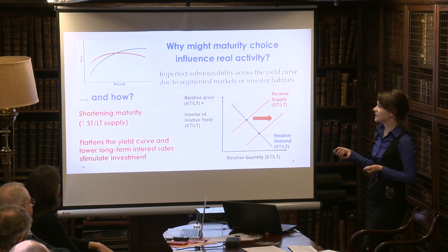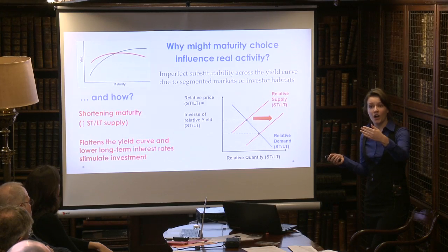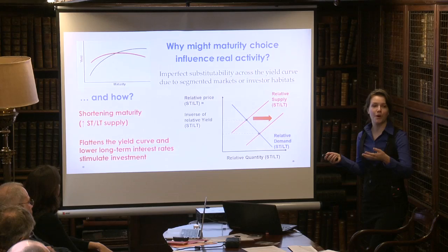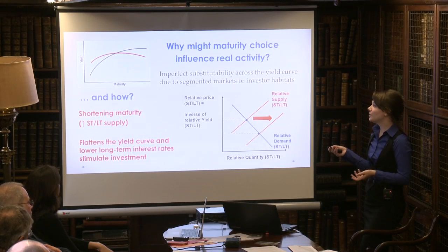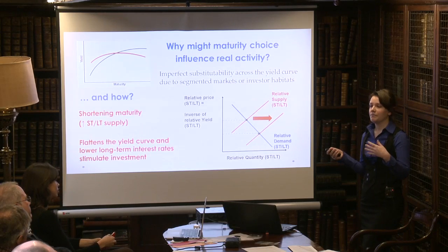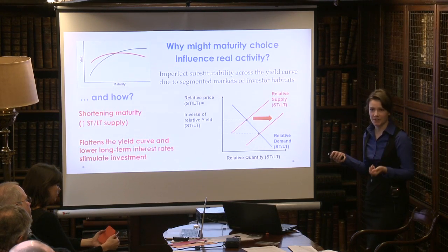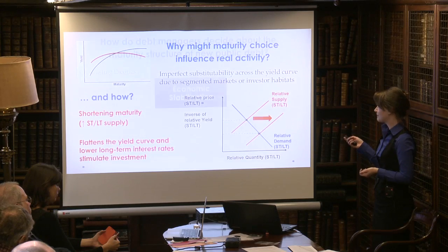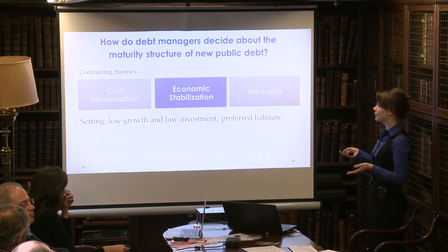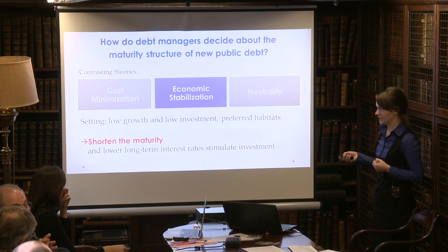So especially if we think that short-term interest rates are already at zero but long-term ones are high, then firms are deterred from making investment and borrowing new money. By lowering the long-term interest rates — by flattening the yield curve — firms are stimulated to invest more, money is cheaper, and it stimulates economic activity. So specifically in a current environment of low growth and low investment and these habitats, you shorten the maturity to stimulate the economy.